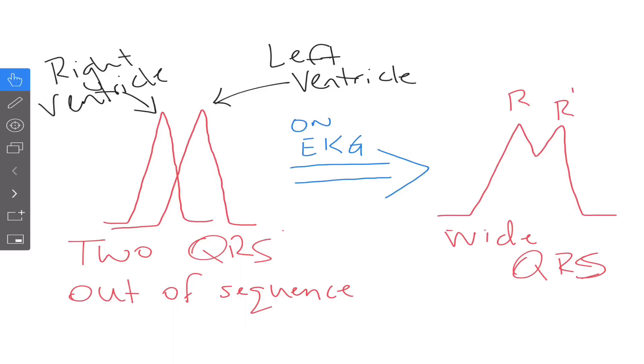So let's define what a bundle branch block is before we get into some of the more nitty-gritty stuff. A bundle branch block is a conduction block in one of the bundle branches. When these blocks exist, the ventricles fire more slowly as the impulse travels cell to cell through the muscle wall instead of through the conduction system like normal.